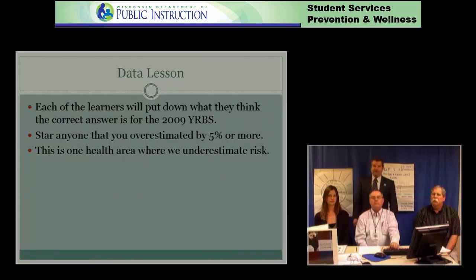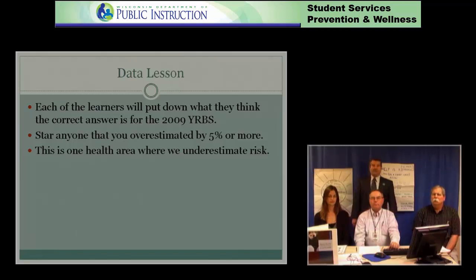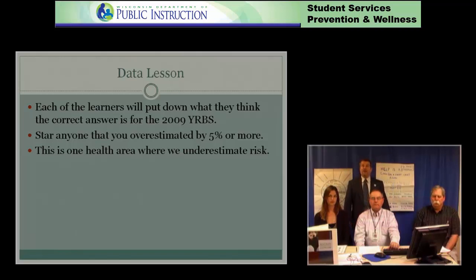The first lesson we are going to model is a database lesson. They're done differently but are in both units of instruction — we're going to do the high school one. Each of my co-workers was asked to answer five questions in the high school data lesson dealing with the issues of depression, planning, and acting on a potential suicide attempt. They answered these questions prior to this presentation. I'm going to ask how many out of five they overestimated the risk for. Mark, would you start? I overestimated one. Mark overestimated the risk by at least 5%.